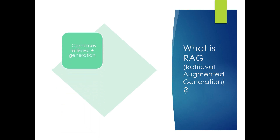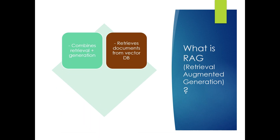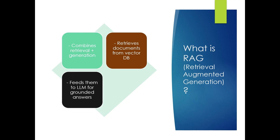What is RAG — Retrieval Augmented Generation? RAG combines a retriever like a vector database with a generator like GPT. It fetches relevant documents based on a user query and feeds them to the model to produce grounded, fact-based responses. It's essential in enterprise use cases to avoid hallucinations.